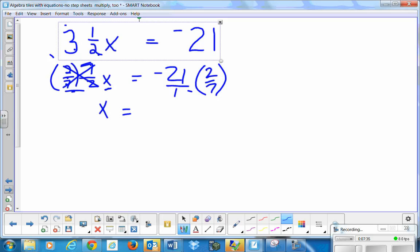Now I have negative 21 times 2 over 7. Well, negative 21 is just negative 21 over 1. The denominator has a 7. That's a common factor to the negative 21, so it leaves us with negative 3. Negative 3 times 2 is negative 6. x is equal to negative 6.